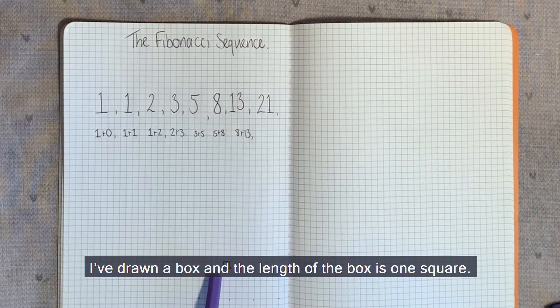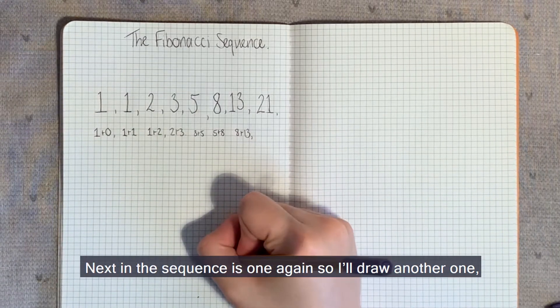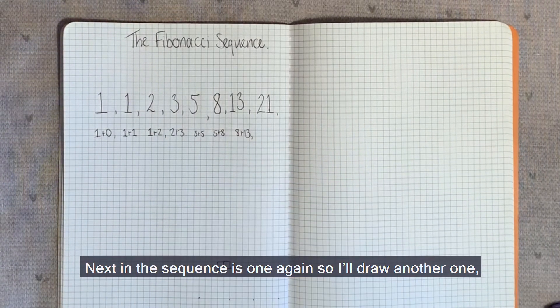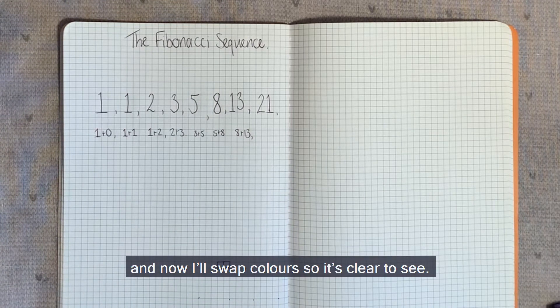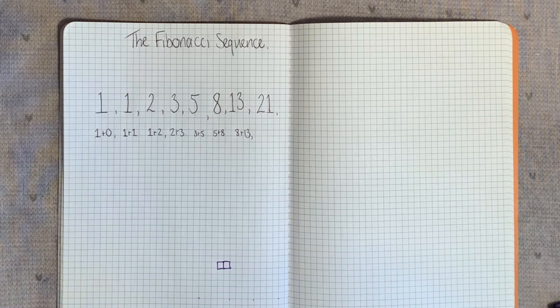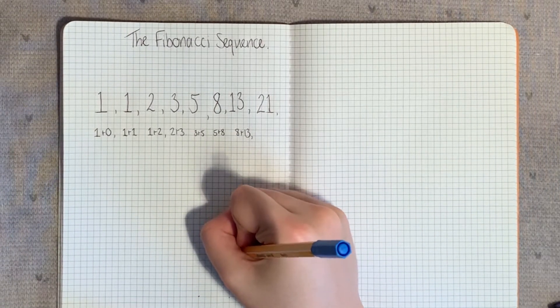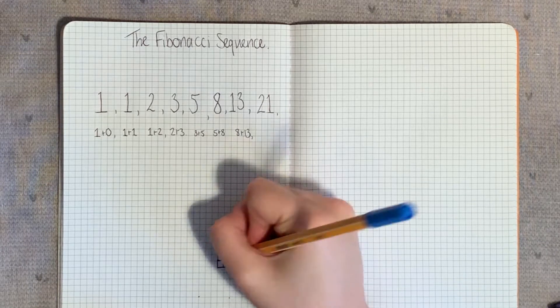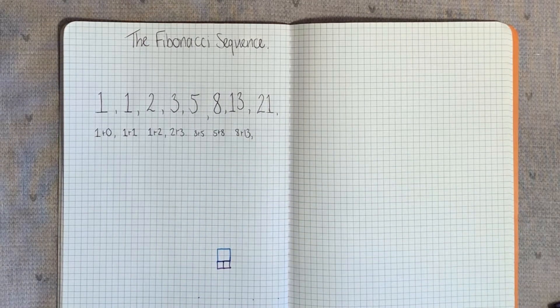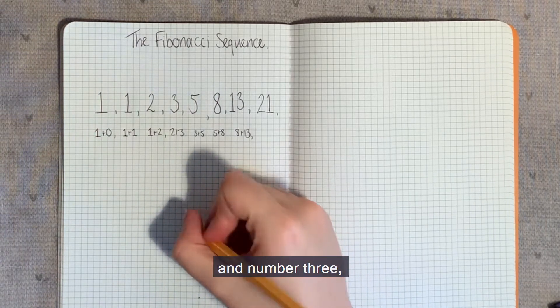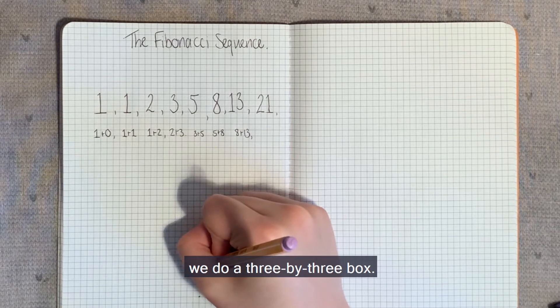I'll draw a box and the length of the box is one square. Next in the sequence is one again, so I'll draw another one. And now I'll swap colors so that it's clear to see. The next number is two. We have a box with a length of two boxes high. And number three, we do a three by three box.